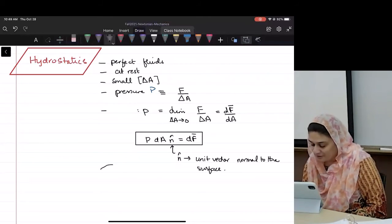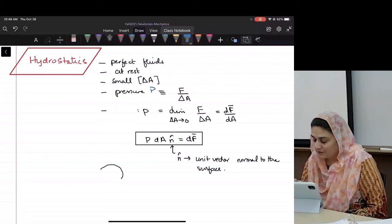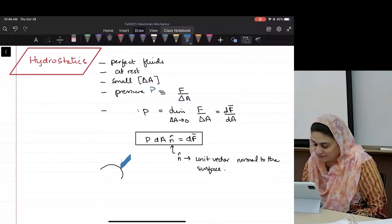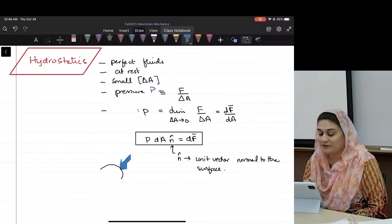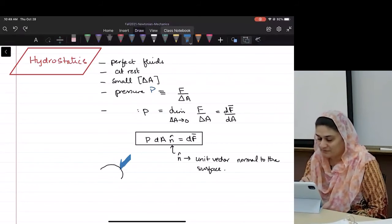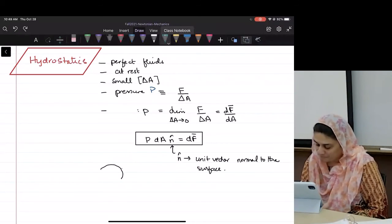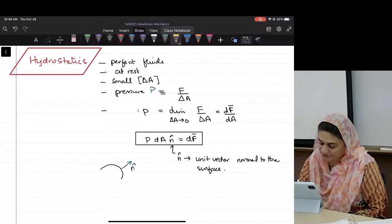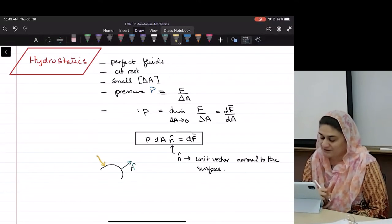So if you have a surface that goes like this and you're applying the pressure here, where will the normal to the surface be? If you're applying a pressure here, where will the normal to the surface be?